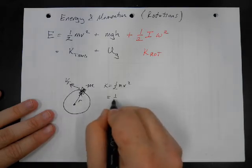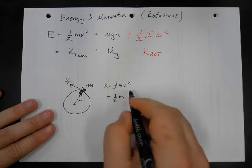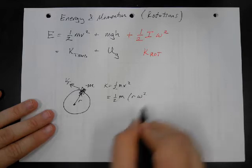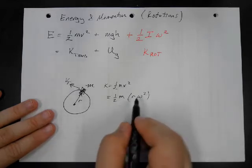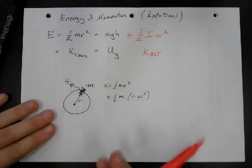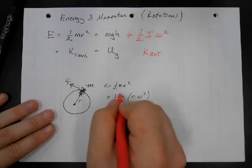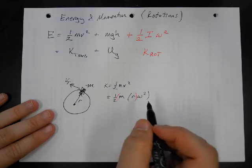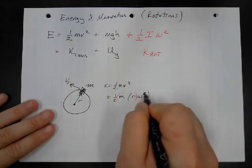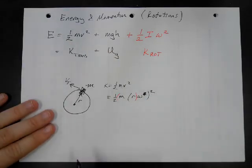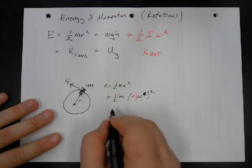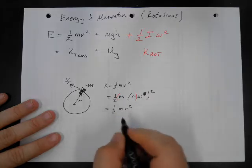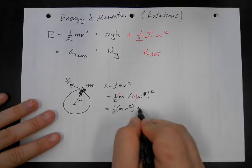So we'll have one-half M, and then this V squared is our omega squared. But we can regroup this. Instead of grouping these things, we can group these things. Sorry, this squared isn't here. It's outside the parentheses. So this is going to be one-half M R squared, omega squared.